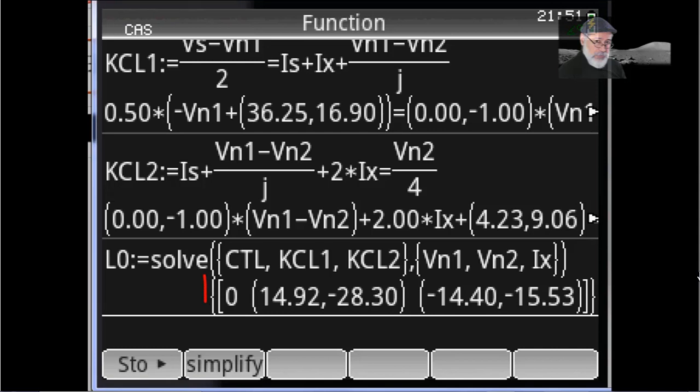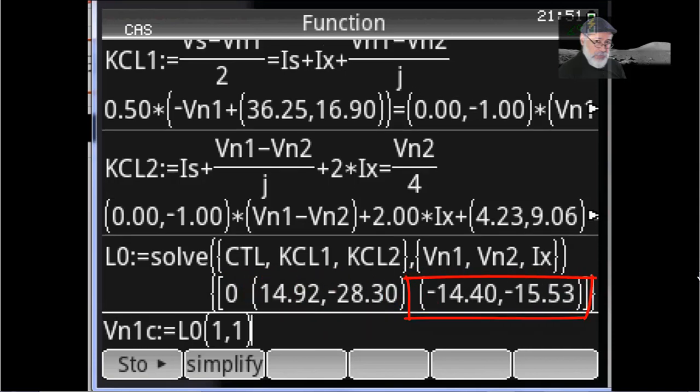V1 is zero. Zero volts. V2 has a complex number for a value. And the current Ix, the control current Ix, is negative 14 real part, negative 15.5 imaginary part.